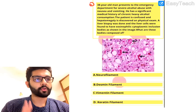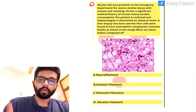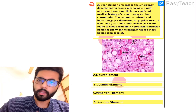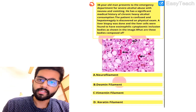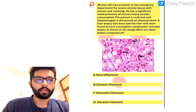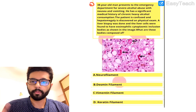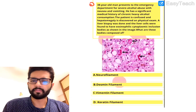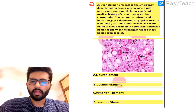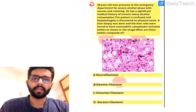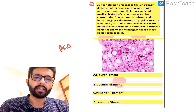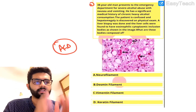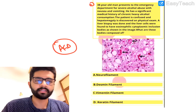Let's look at the history. You have a chronic alcoholic who comes with an acute episode of alcohol, nausea, vomiting, confusion, and on examination you found hepatomegaly. When you see chronic alcoholic, hepatomegaly, and these features of nausea, vomiting, and confusion, the only thing that comes to mind is alcoholic liver disease — a history very indicative of alcoholic liver disease.